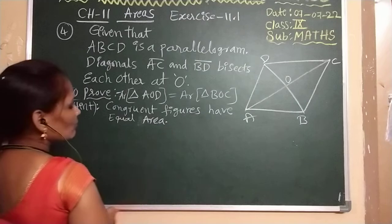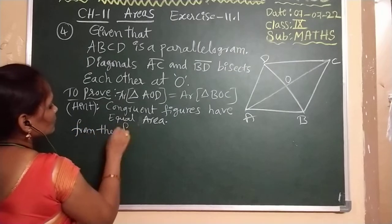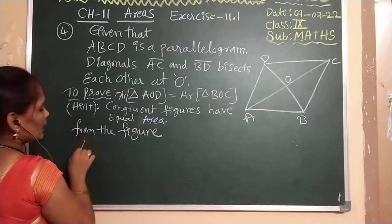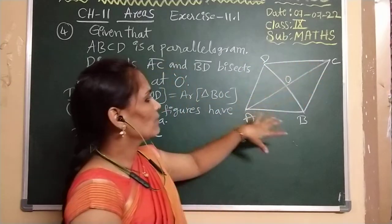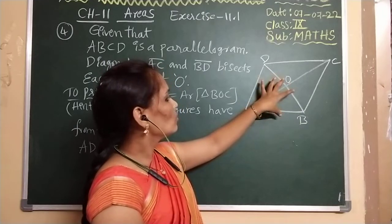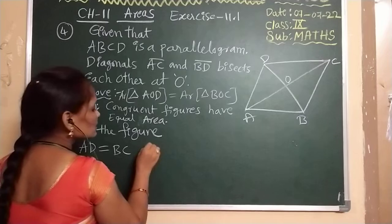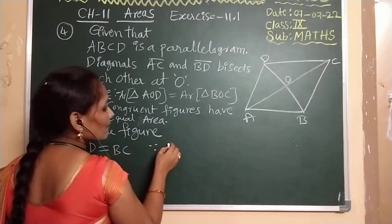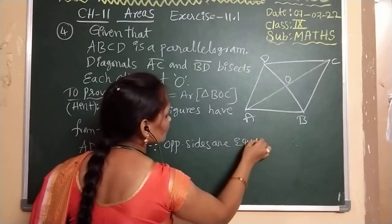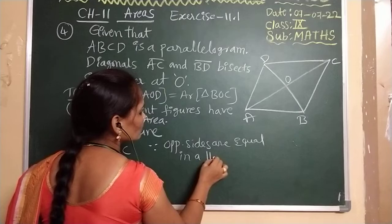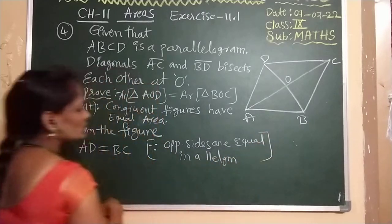From the figure, AD is equal to BC. Why? Because ABCD is a parallelogram, and in a parallelogram, opposite sides are equal. AD is opposite to BC, so since opposite sides are equal in a parallelogram, we have AD equals BC.